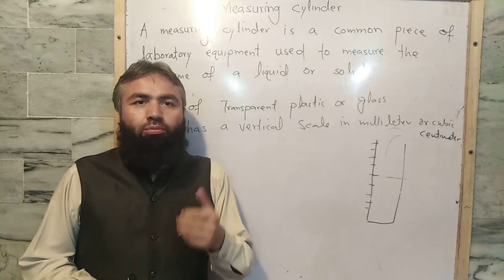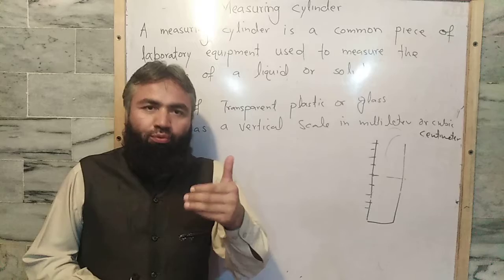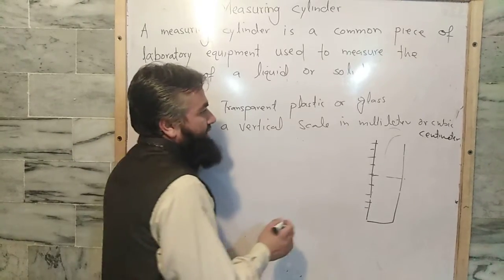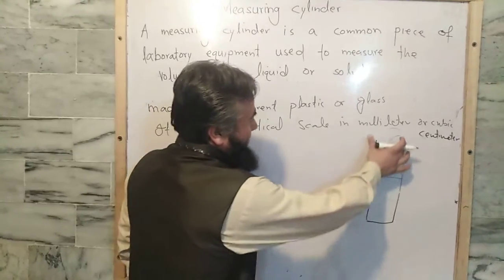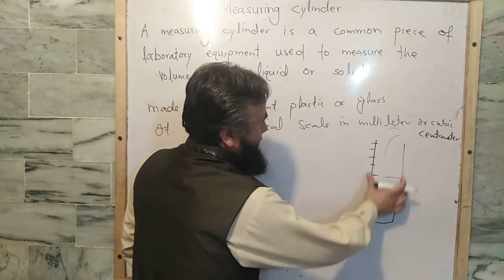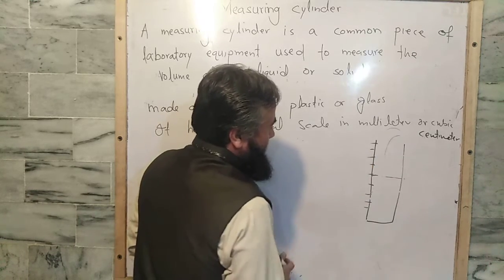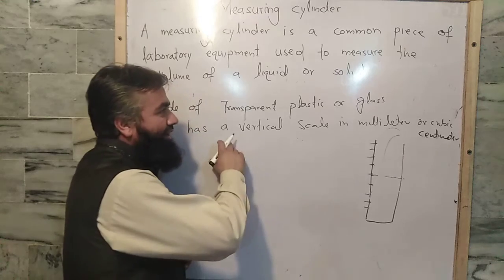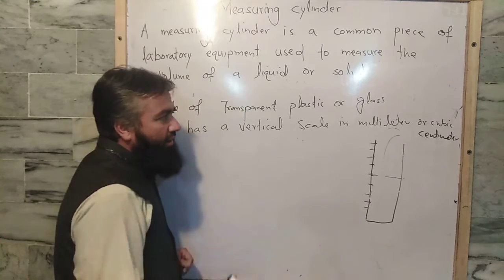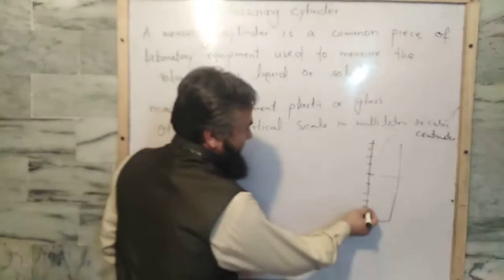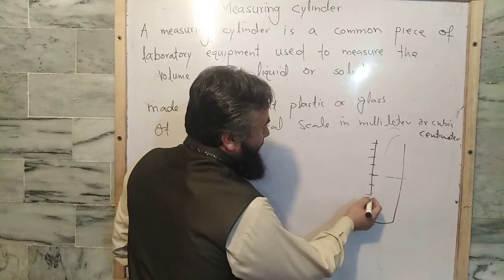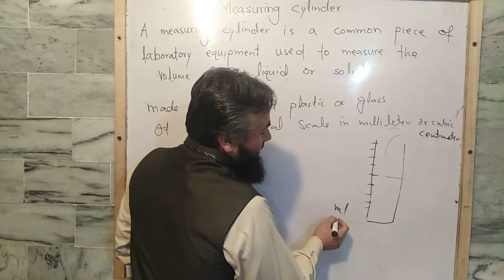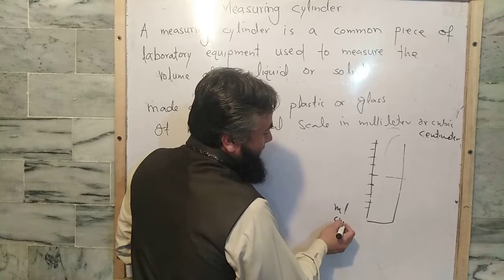If you want to measure the volume of a liquid, we use a measuring cylinder. A measuring cylinder is made of transparent plastic or glass. It has a vertical scale in milliliters or cubic centimeters.